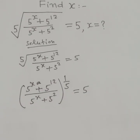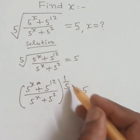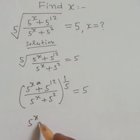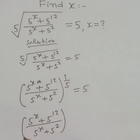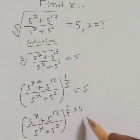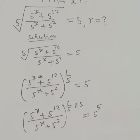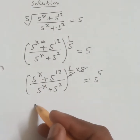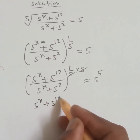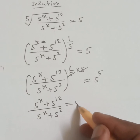Now, we raise both sides to the power 5. So 5 to the power x plus 5 to the power 12, divided by 5 to the power x plus 5 squared, is equal to 5 to the power 5.